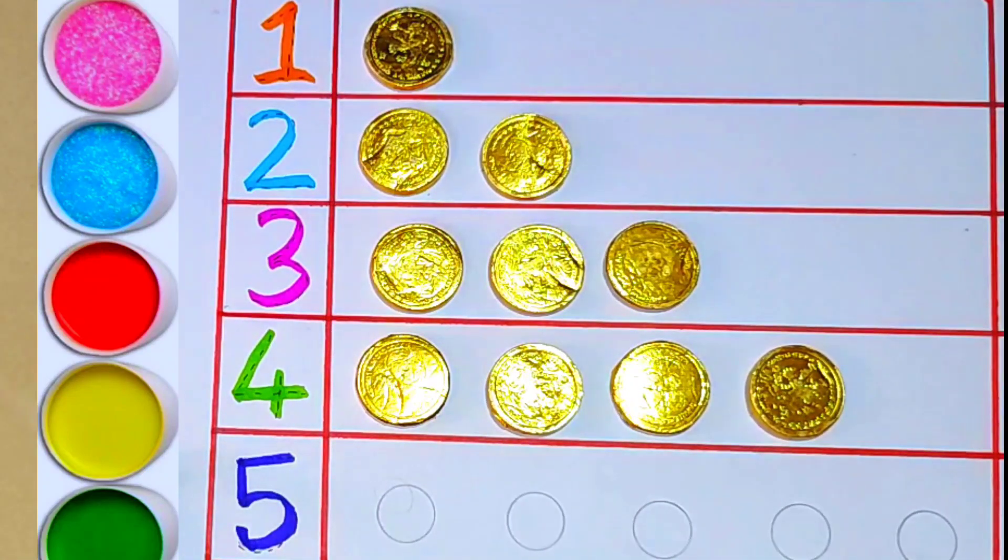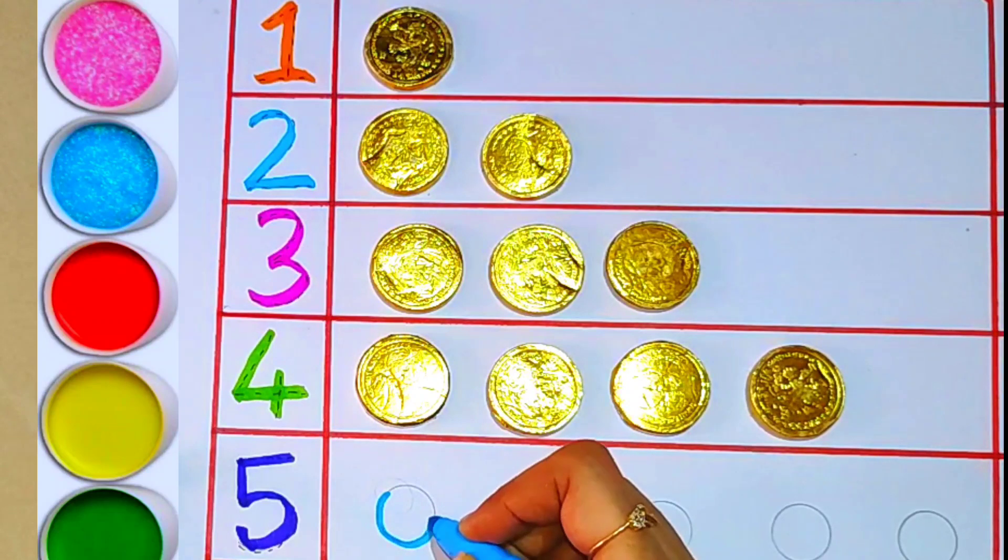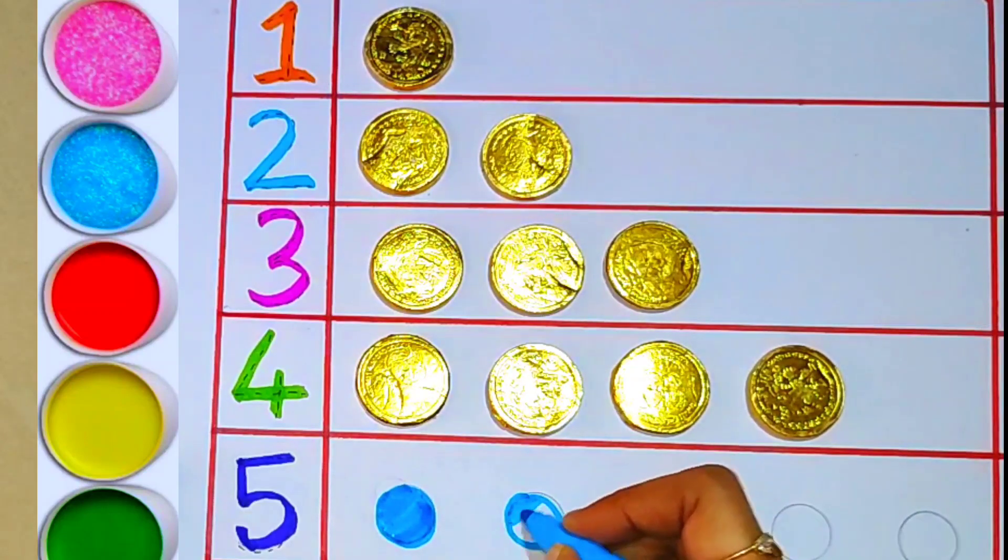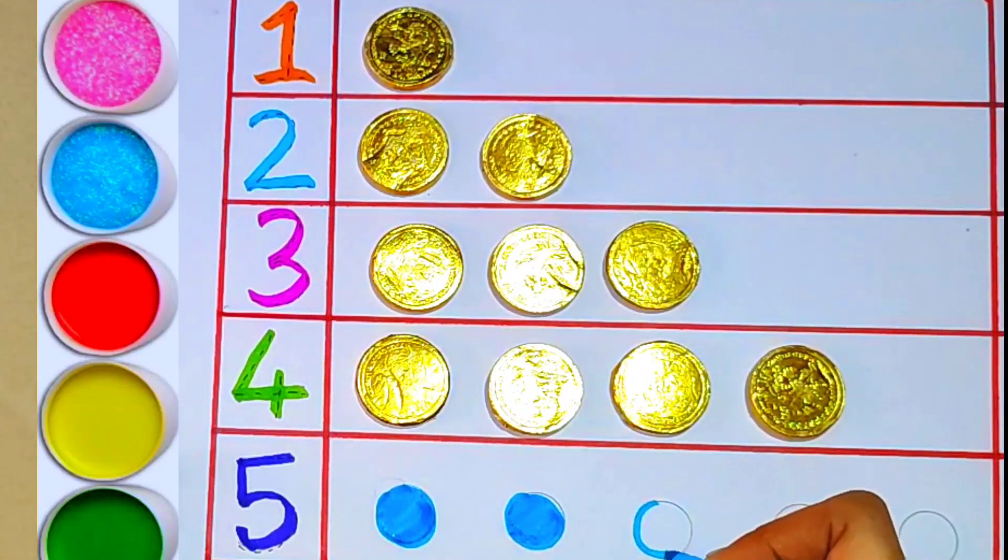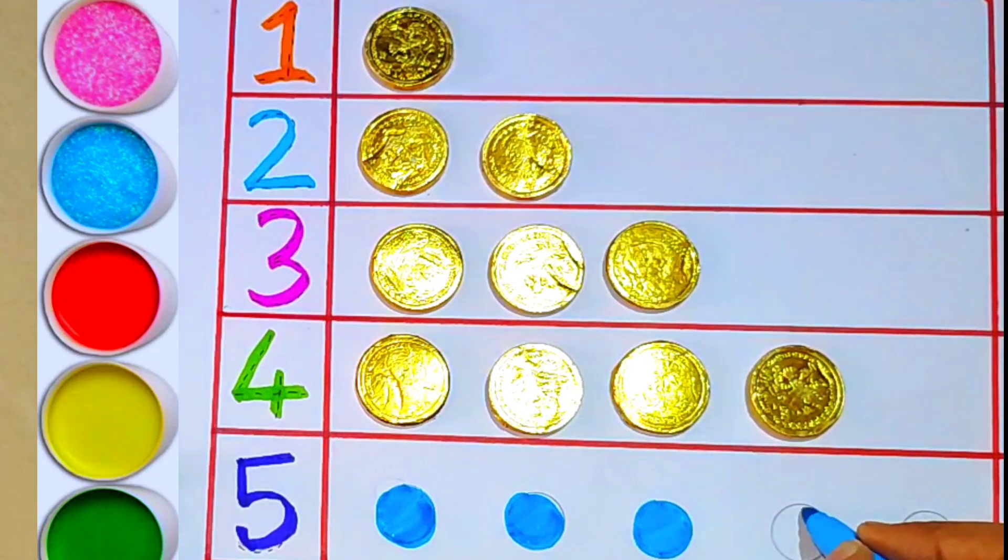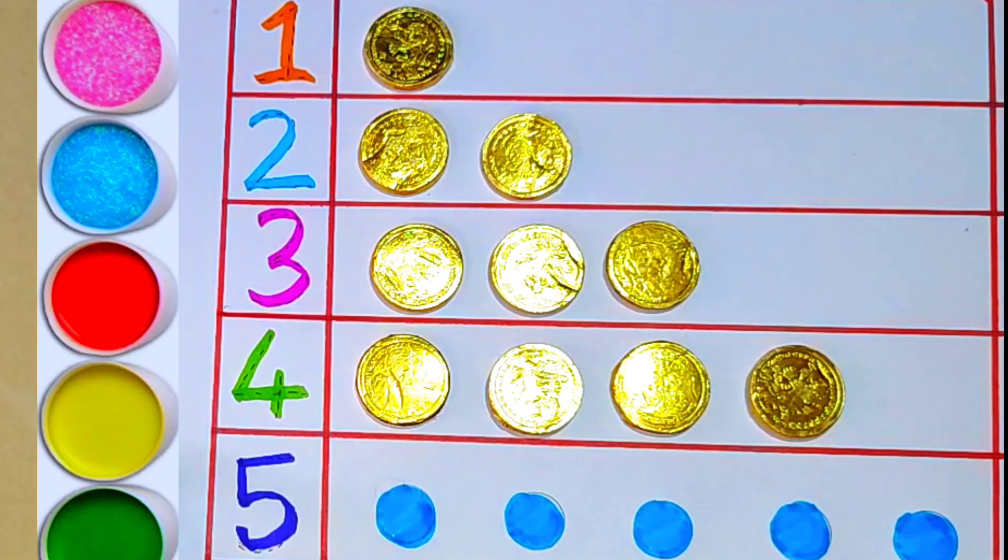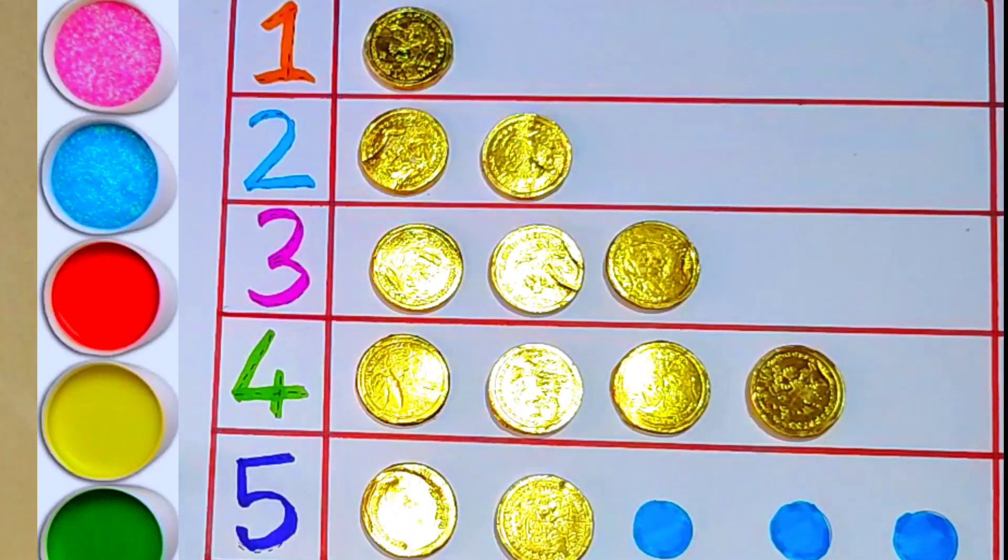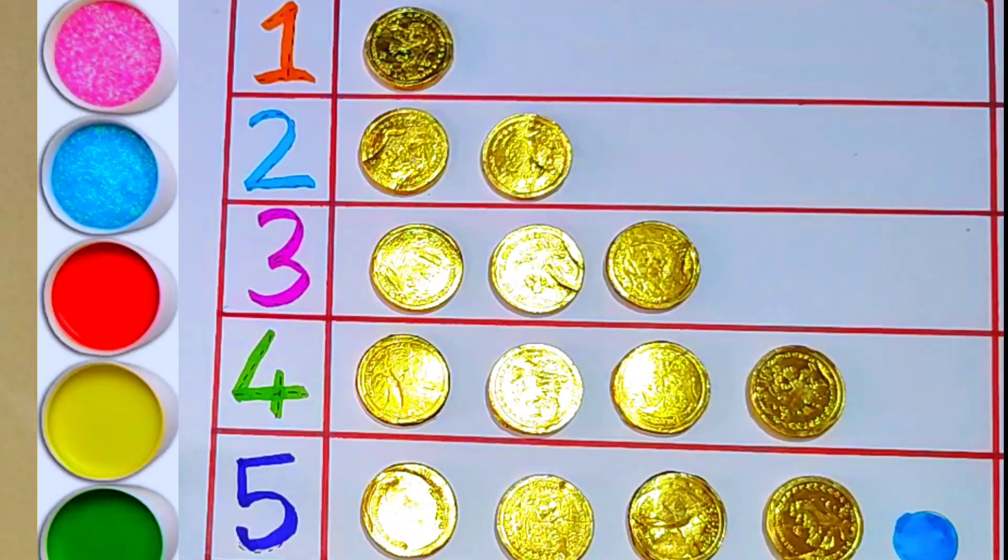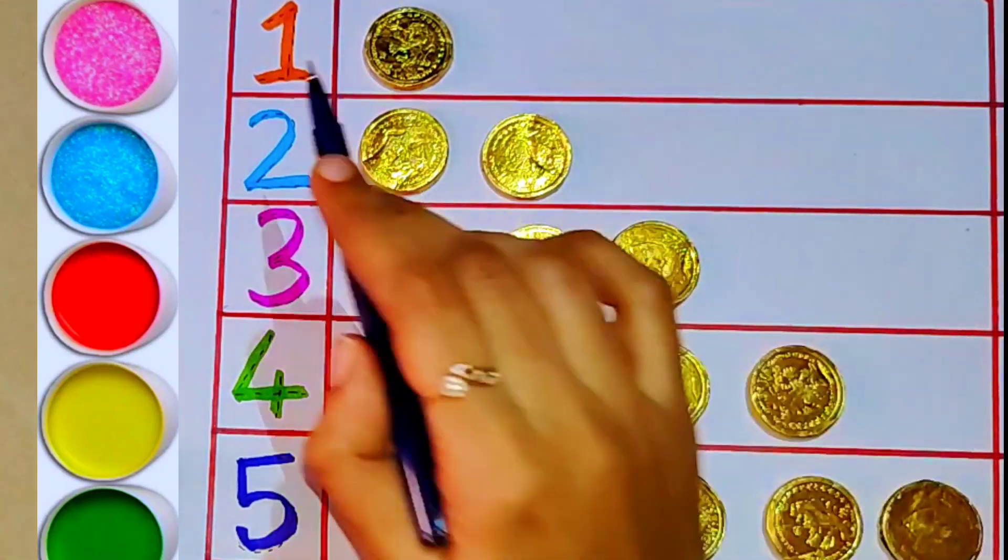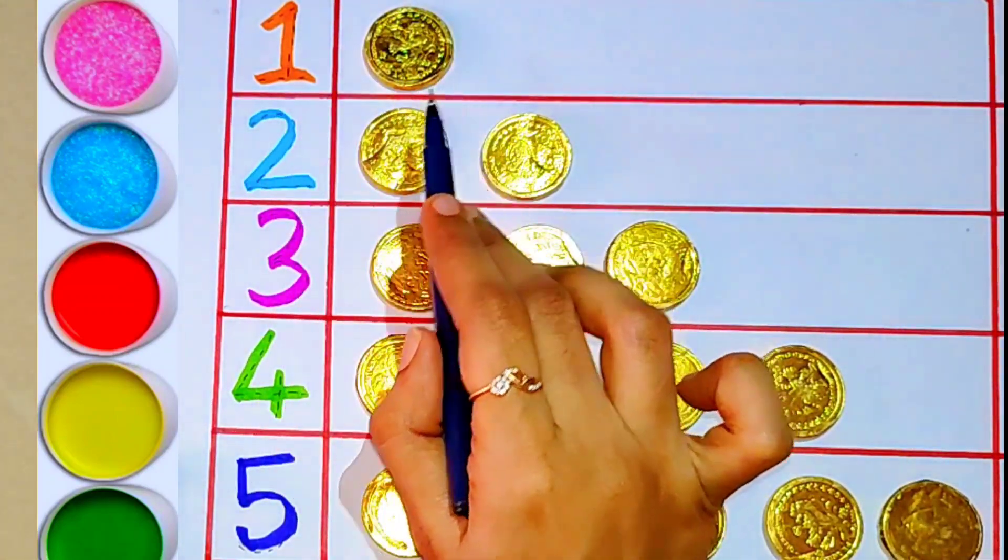Number five, light blue color. One, two, three, four, five - five balls. One, two, three, four, five - five coins.